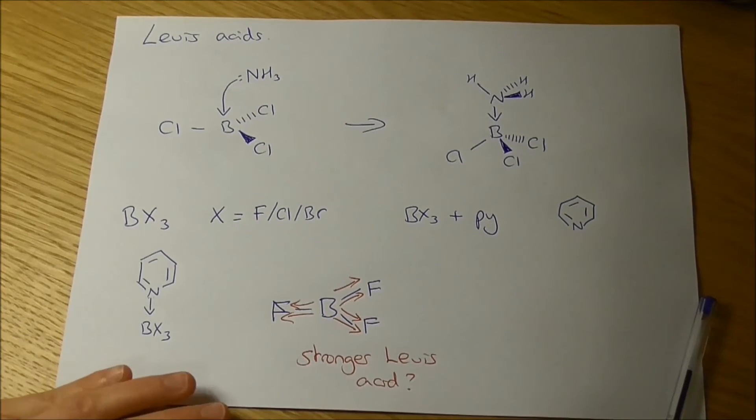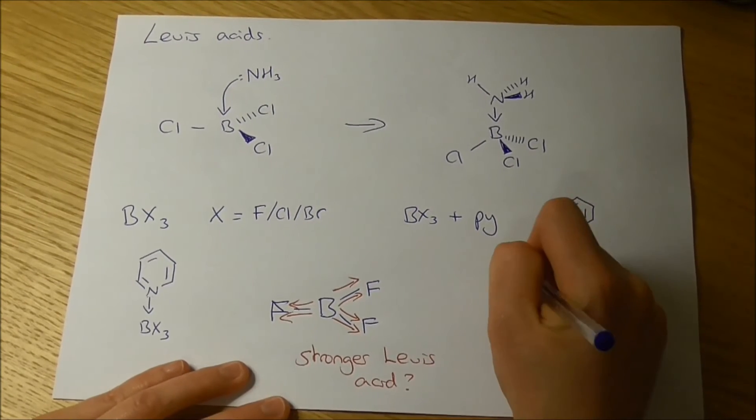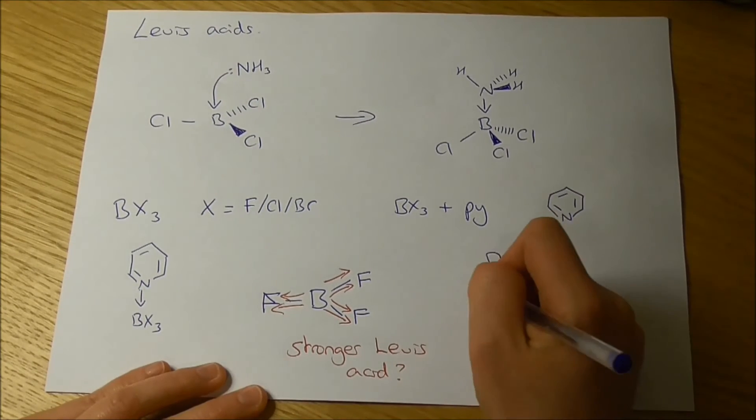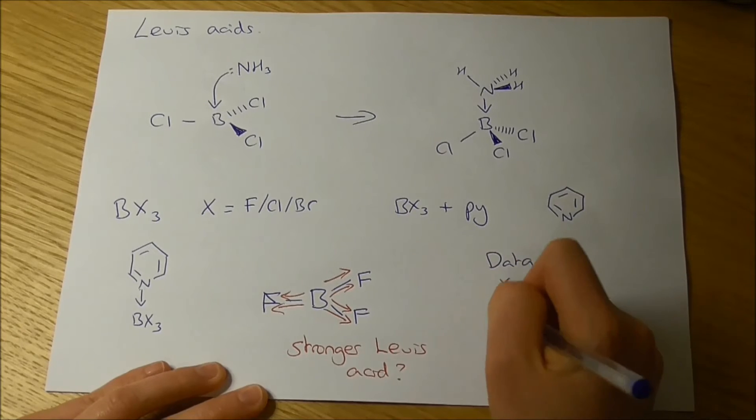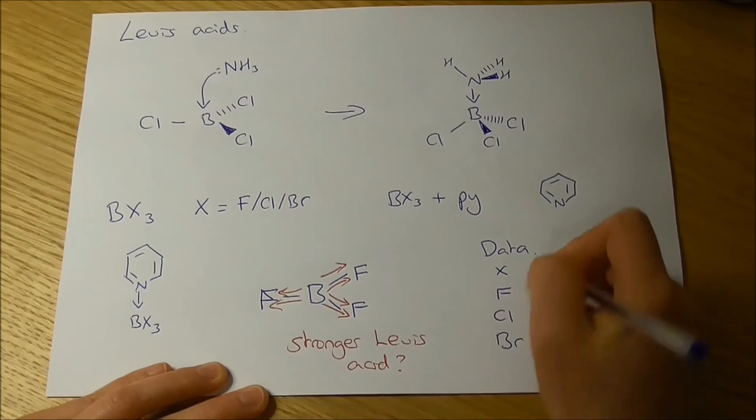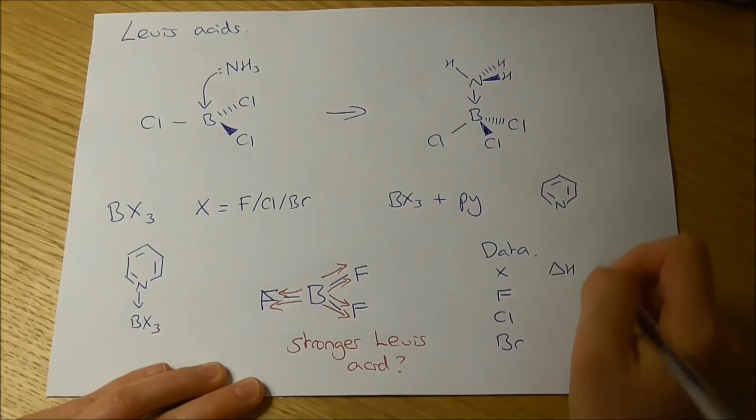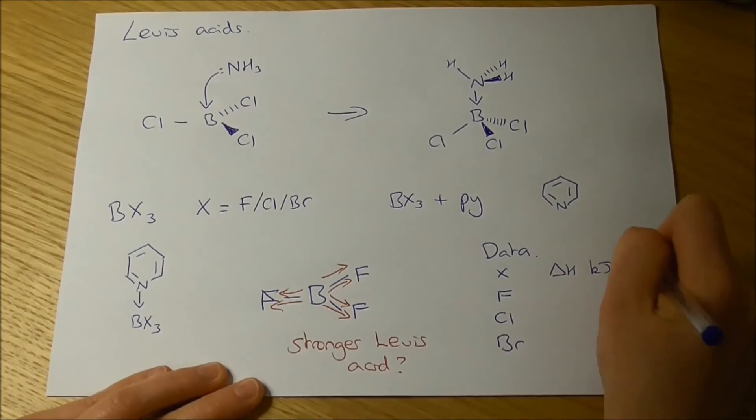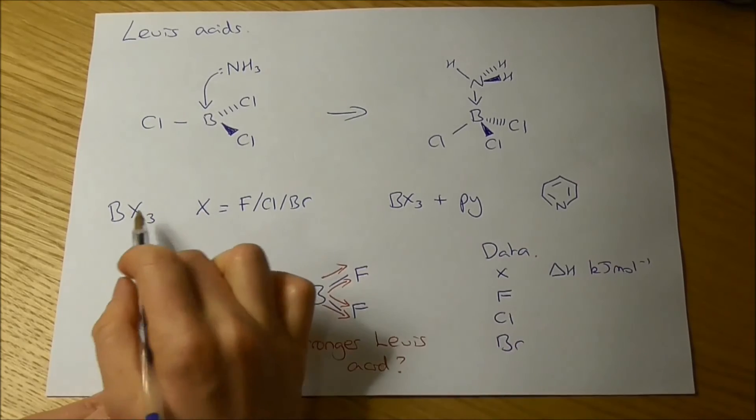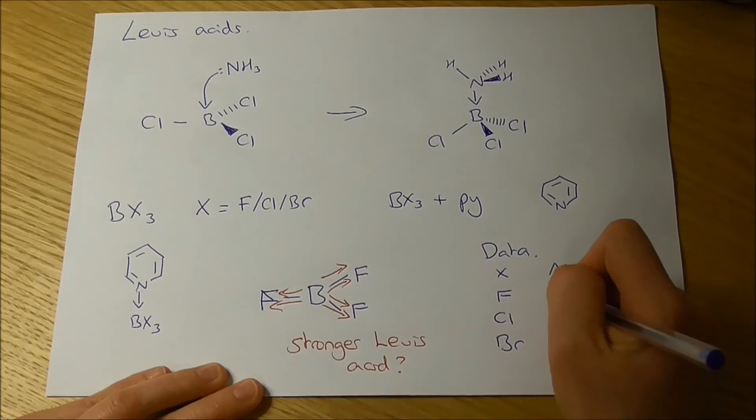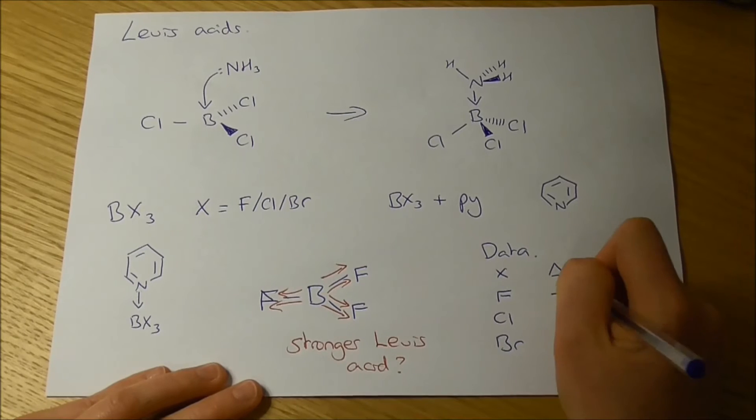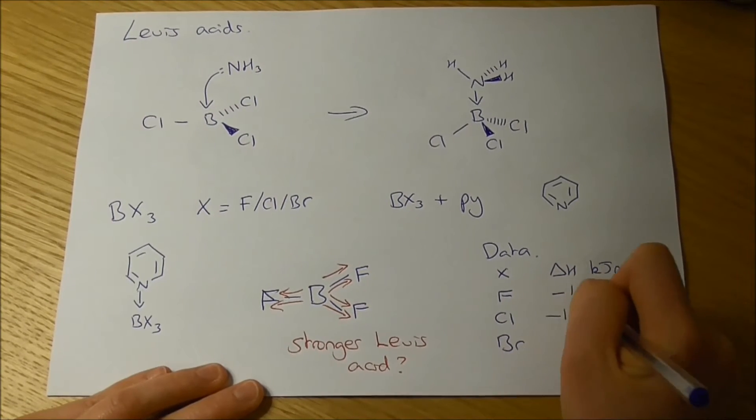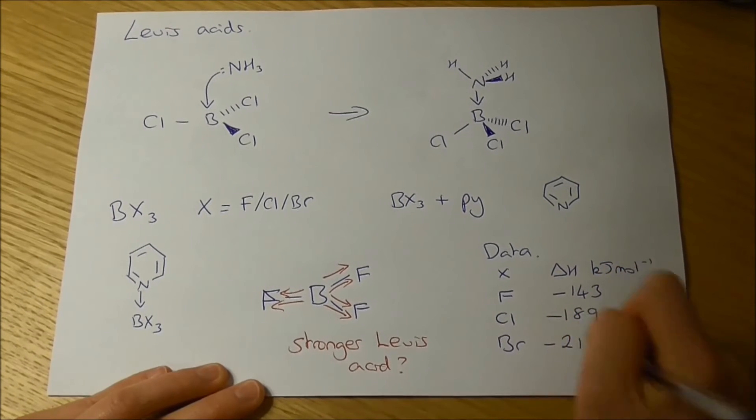But if we look at the data, the energetic data for these species, we're looking at these delta H values, enthalpy of reaction in kilojoules per mole. Then for the boron trifluoride reaction with pyridine, we see that delta H is minus 143 kilojoules per mole, for chlorine it's minus 189, and for bromine it's minus 217.